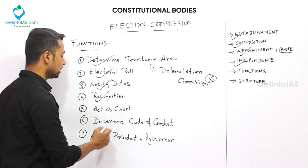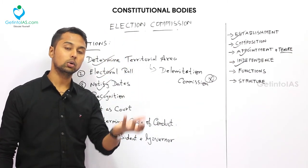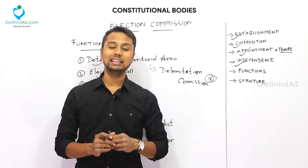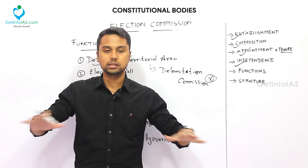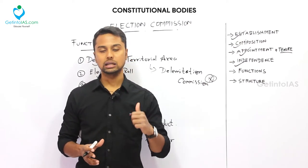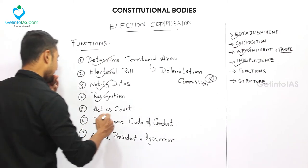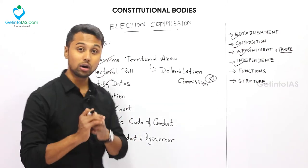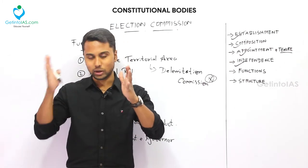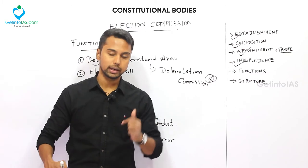The fourth function is recognition of political parties. There are numerous political parties in India, and recognizing a party as a national party or a state party is done by the Election Commission. The fifth function is acting as a court: when there is a dispute about the recognition of a political party, the Election Commission acts as a court. However, if there is a dispute in the election itself, it is handled by the Supreme Court only. The Election Commission also determines the code of conduct — the discipline and procedure for how elections should take place.